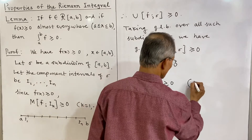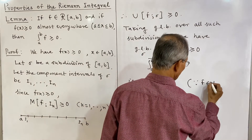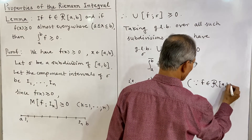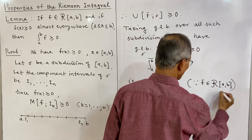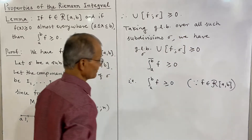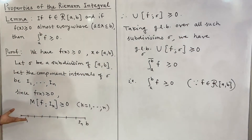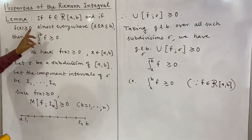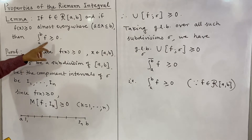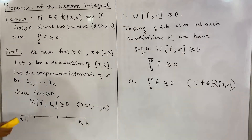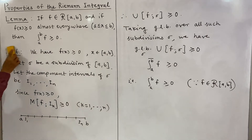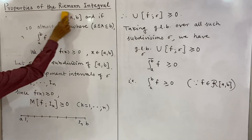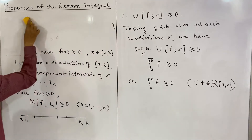Since f is Riemann integrable over the closed bounded interval [a, b], this proves the result. The lemma is simple: if f ≥ 0, then the integral of f is also ≥ 0. Now we shall use this lemma to prove a corollary.